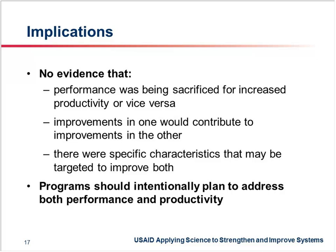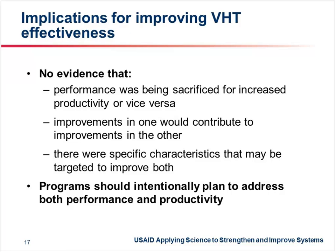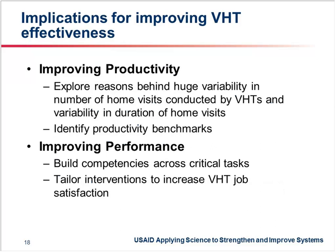If you get better performance for self-management support, then you're probably going to have lower productivity among that VHT. Implications for improving VHT effectiveness in Uganda include exploring why this study found such large variability in the number of home visits performed — between 2 and 115 — especially if home visits are seen as an important task in community-based HIV services. We may want to think about productivity benchmarks for key services.